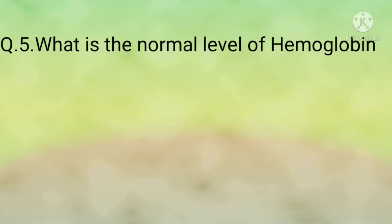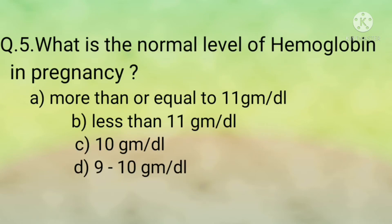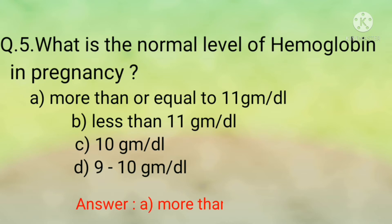Question number five: What is the normal level of hemoglobin in pregnancy? Options are: option A, more than or equal to 11 gram per deciliter; option B, less than 11 gram per deciliter; option C, 10 gram per deciliter; option D, 9 to 10 gram per deciliter. The correct option is option A, more than or equal to 11 gram per deciliter.